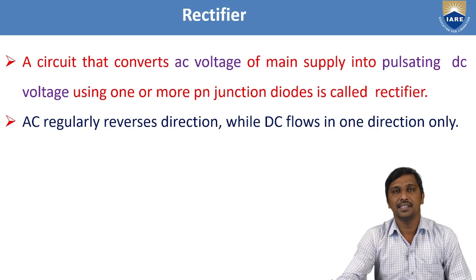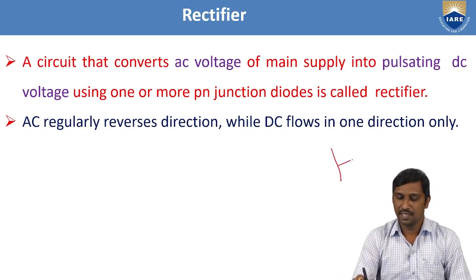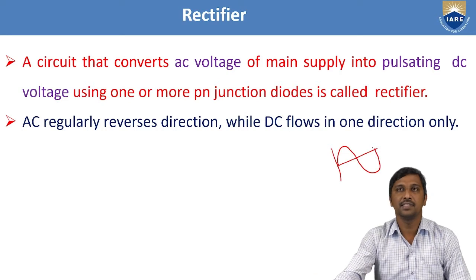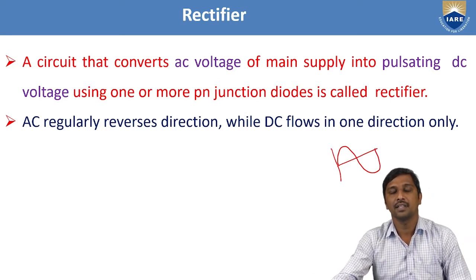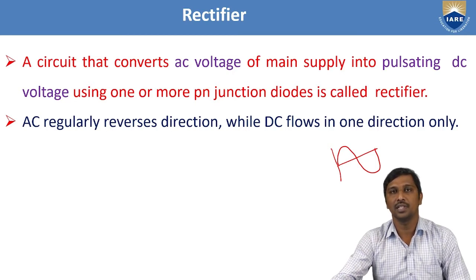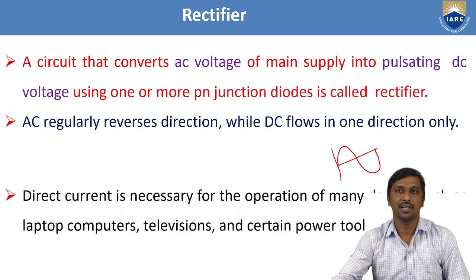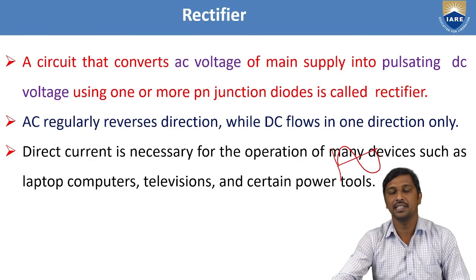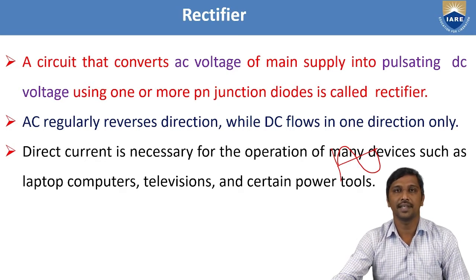The pulsating DC signal contains a DC signal along with some AC components. If you observe the AC signal, it reverses direction at every instant. But the DC signal maintains direction — either positive or negative. That is the reason the DC signal flows in only one direction. Most electronic devices require the DC signal, hence we need to convert the given AC signal to a pulsating DC signal using this rectifier circuit.